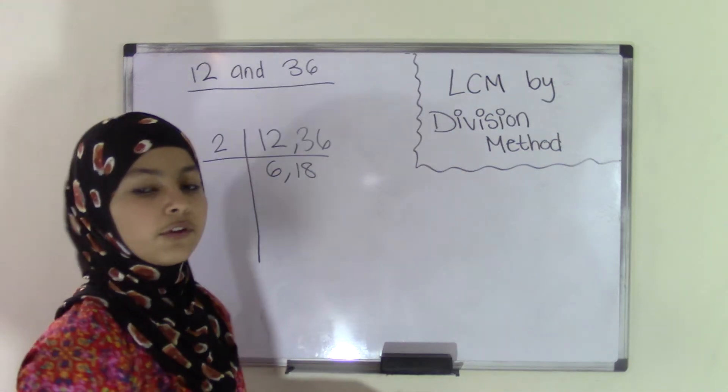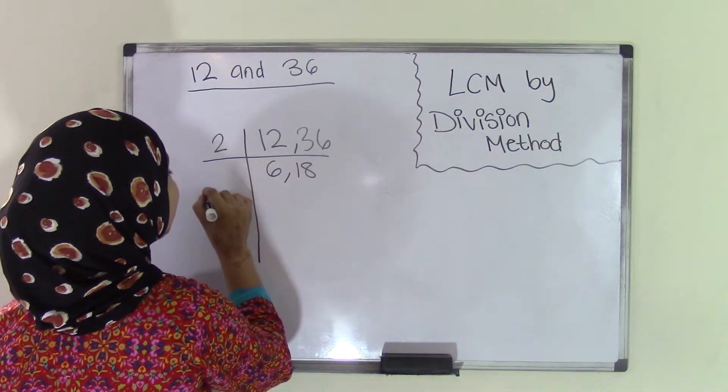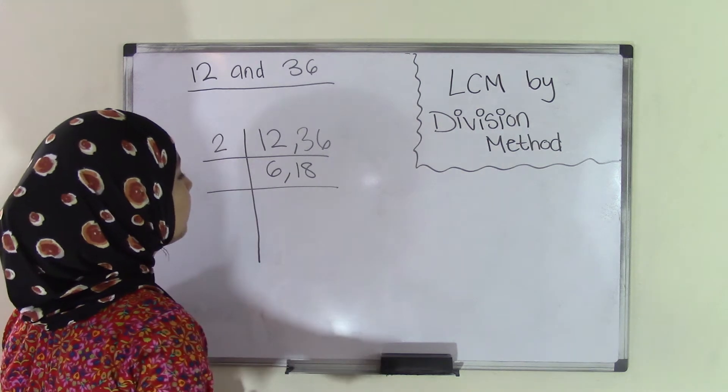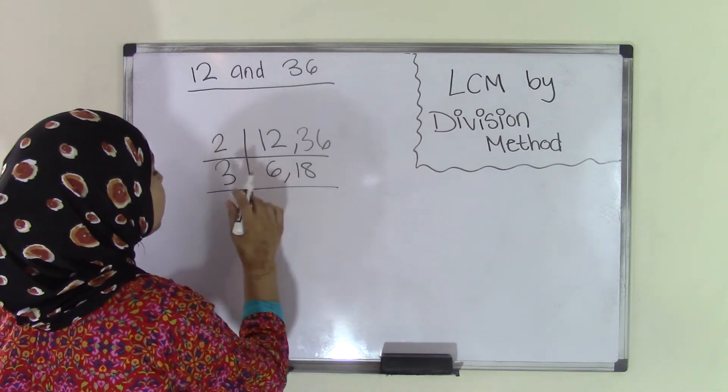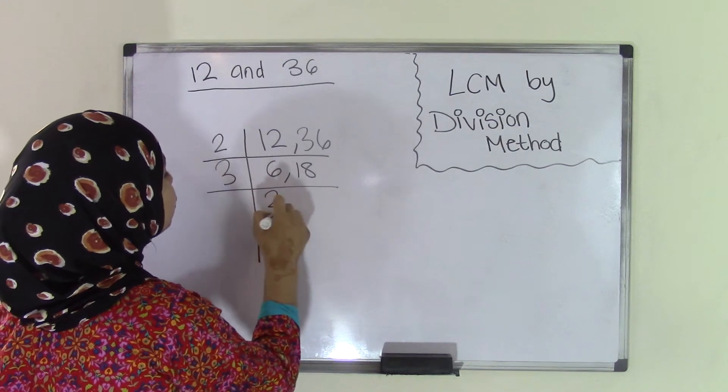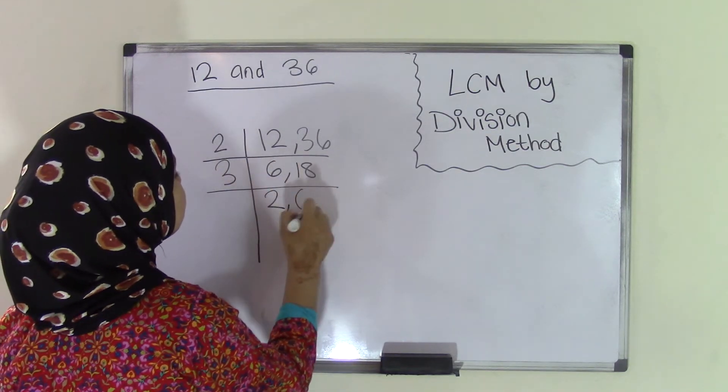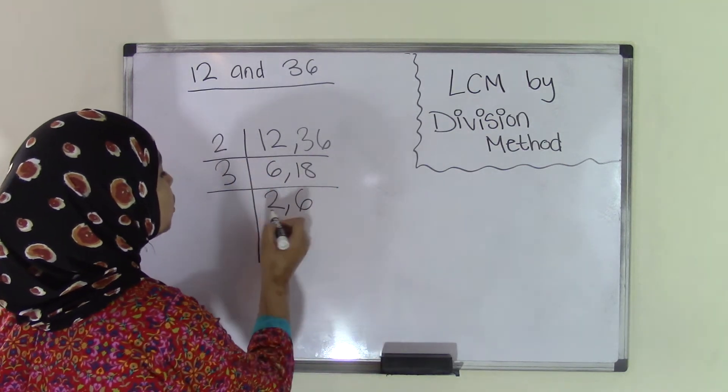We can break this apart further by dividing 6 and 18 by another prime number that is divisible by both. We can use 3, because 3 goes into 6 twice, and 3 goes into 18 six times, leaving us with 2 and 6.